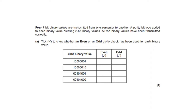Four 7-bit binary values are transmitted from one computer to another with a parity bit added, creating 8-bit values. All values were transmitted correctly. Tick even or odd parity for each: the first has 2 ones — even parity. The second also has 2 ones — even parity. The third has 3 ones — odd parity. The fourth has 2 ones — even parity.